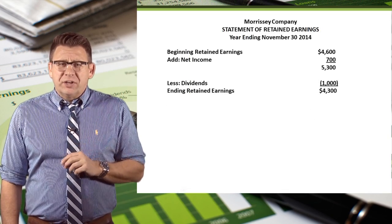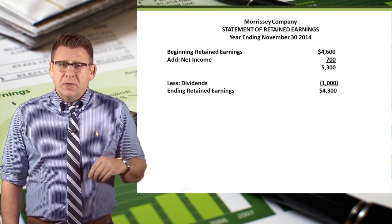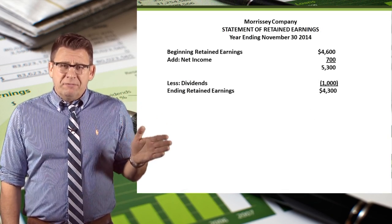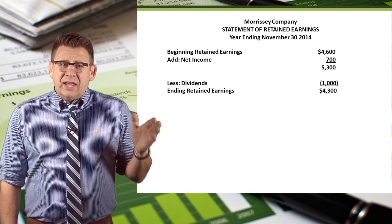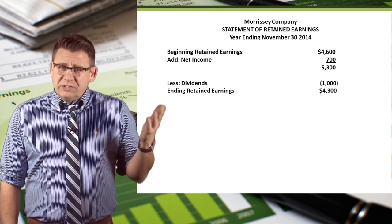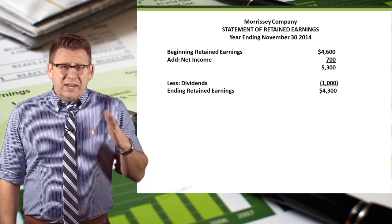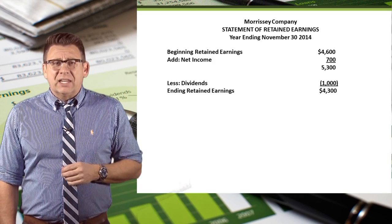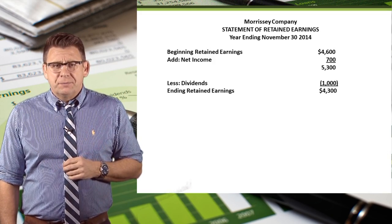The statement of retained earnings has a company name, the name of the financial statement, and the date, which is always 'year ended' and then whatever the date is. The date is done exactly like we do with the income statement.